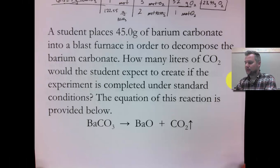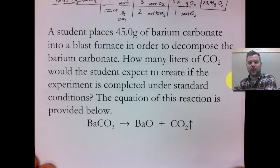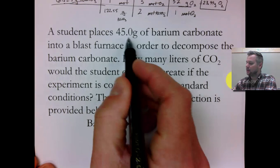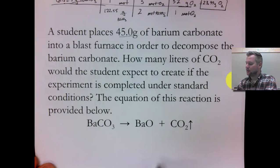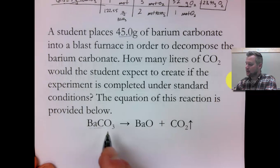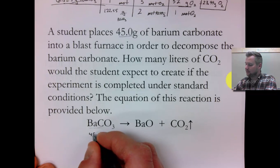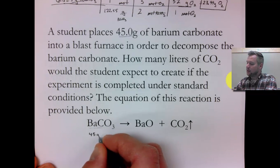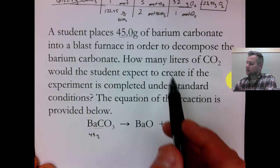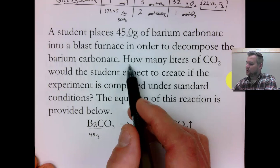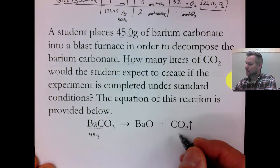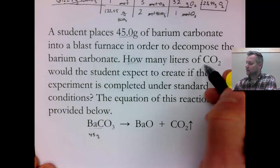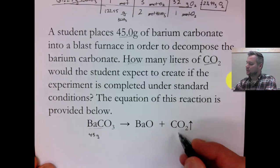Here is a set of example problems for mass-to-volume and volume-to-mass stoichiometry. Like the previous problem, we need to ID what we know. A student places 45 grams of barium carbonate into a blast furnace. So here's what I know: 45 grams of barium carbonate. I'll write that down — 45 grams. Then it says how many liters, so here's my question word. I'll need to find the chemical being discussed, so question mark liters in this case.